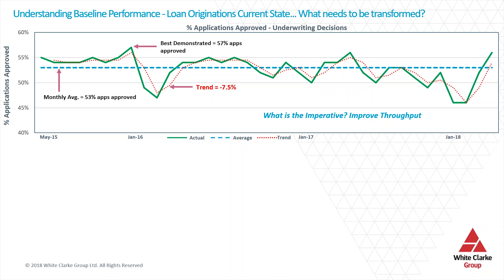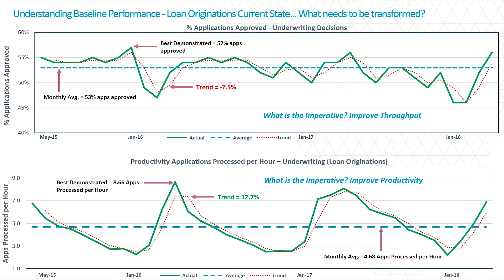The imperative here is that we don't merely want to reduce the trend by seven and a half percent — we want to improve throughput as measured by an increase not only in the number of applications approved but obviously the percentage. Sticking with the underwriting credit decisioning perspective, the future state imperative is based on the current level of productivity as measured by a monthly average of 4.68 applications processed per hour. If we don't have these metrics from which to base future operating model improvement on, then we have nothing — we have conjecture and supposition, not transformation. We've calculated the statistical norms represented by the average and then calculated a trend, all of which will help shape what future improvement will look like from which to base any type of cost improvement.